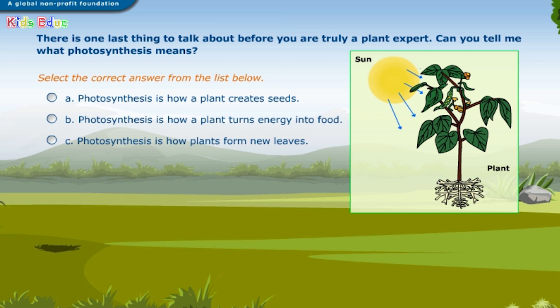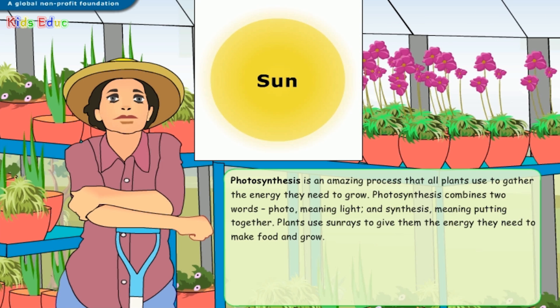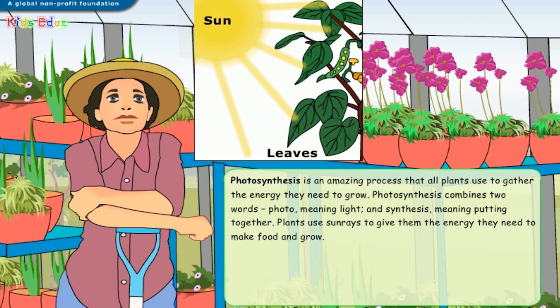There is one last thing to talk about before you are truly a plant expert. Can you tell me what photosynthesis means? Select the correct answer: A. Photosynthesis is how a plant creates seeds. B. Photosynthesis is how a plant turns energy into food. C. Photosynthesis is how plants form new leaves. Correct — photosynthesis is how a plant turns energy into food. Photosynthesis is the process in which a plant uses energy from the sun to make food. Without it, plants wouldn't be able to survive. Photosynthesis combines two words: photo, meaning light, and synthesis, meaning putting together.